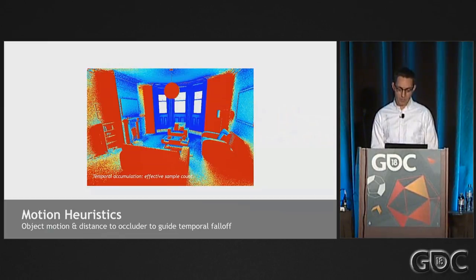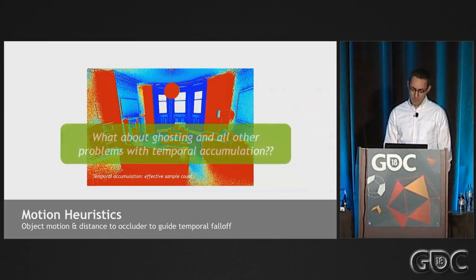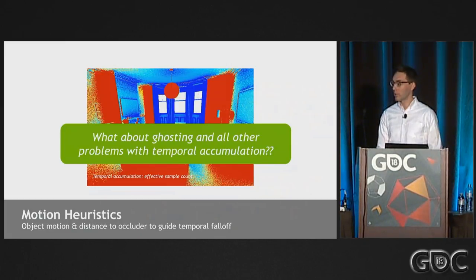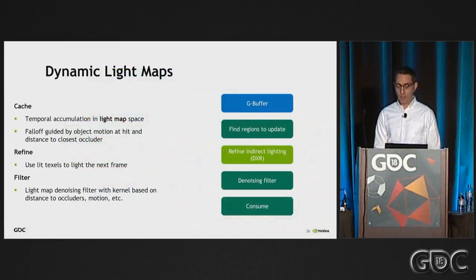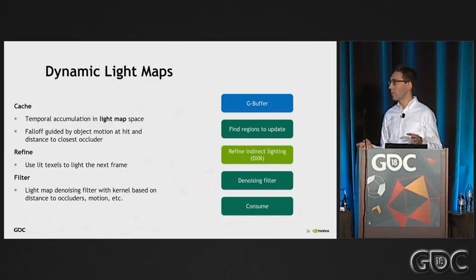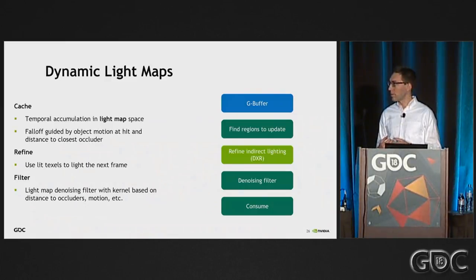But of course this doesn't really solve the problem. I think you're all wondering what to do about ghosting and all these other problems with temporal accumulation, because you can't really accumulate over hundreds or thousands of frames using temporal accumulation in screen space. Those problems are mainly an effect of working in screen space — you have to re-project using motion vectors, you have problems at the screen boundaries, and you have problems with dis-occlusions when an object moves and pixels become unoccluded that weren't previously seen.